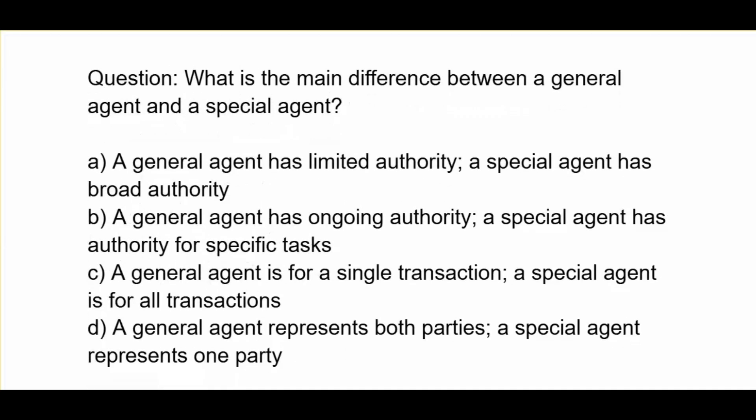What is the main difference between a general agent and a special agent? A. A general agent has limited authority; a special agent has broad authority. B. A general agent has ongoing authority; a special agent has authority for specific tasks. C. A general agent is for a single transaction; a special agent is for all transactions. D. A general agent represents both parties; a special agent represents one party.